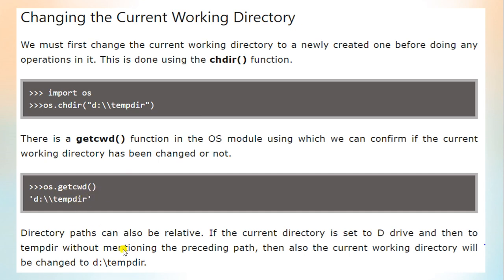Directory paths can also be relative. If the current directory is set to the D drive and then to tempdir without mentioning the preceding path, the current working directory will still be changed to D:/tempdir.